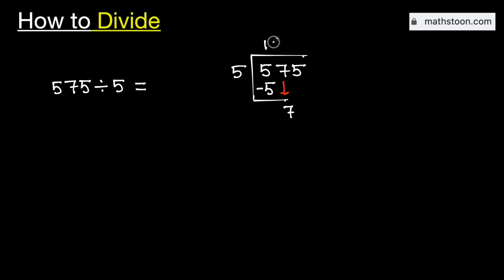And we know that 5 times 1 is 5. Subtract, we get 2. Now again, 2 is less than 5.